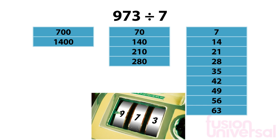We are going to start taking numbers away from 973. In the first column, we can take away 700. This leaves 273. From the second column, we can take away 210. This now leaves 63.